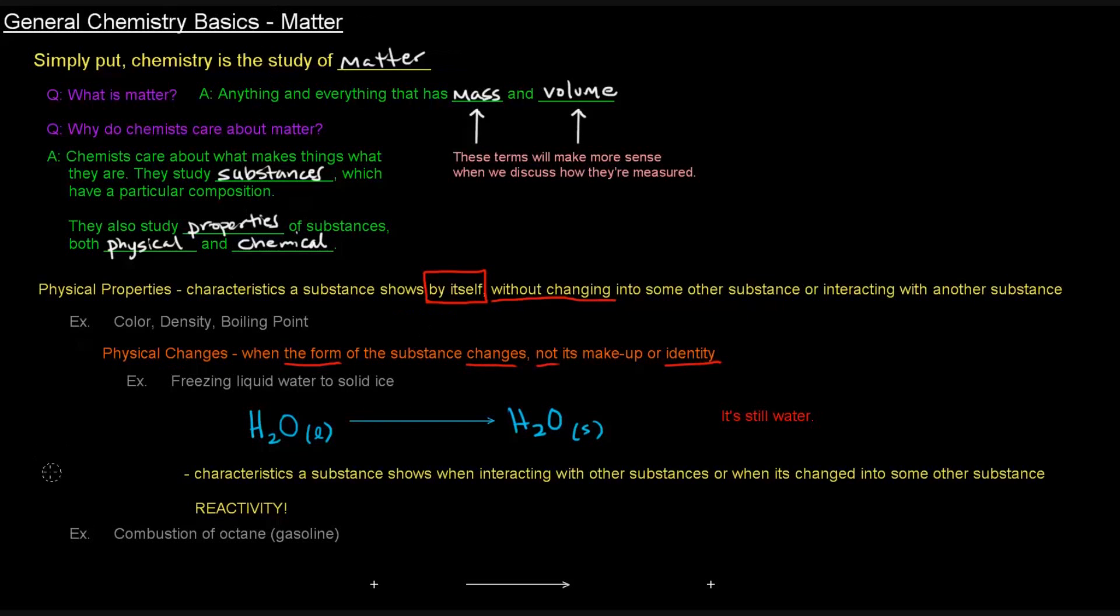Now let's talk about chemical properties. Chemical properties, as you might imagine, are characteristics a substance shows when interacting with other substances. So that's the important part of this definition, interacting with other substances. Or when it's changed, that's also a really important term, into some other substance. So really, chemical properties basically describe the reactivity of a certain substance.